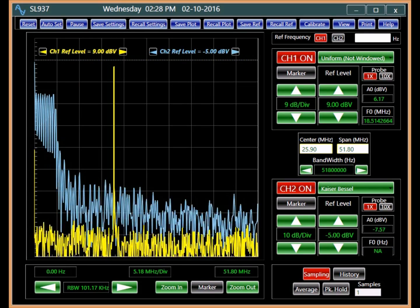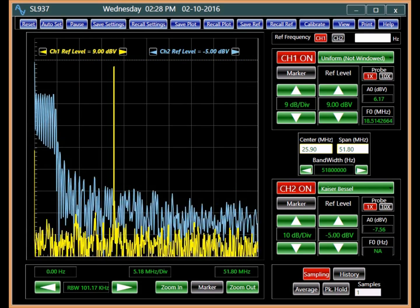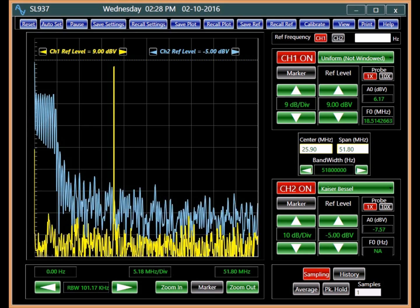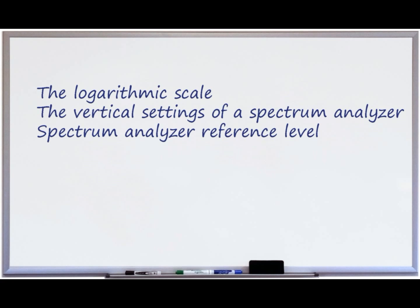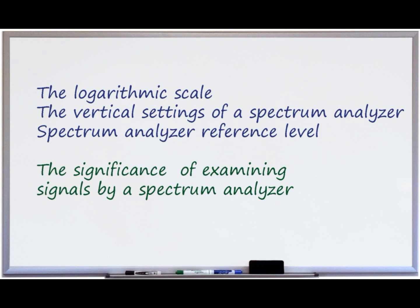Effective operation of a spectrum analyzer requires a thorough understanding of these aspects. The intent of this tutorial is to briefly describe the logarithmic scale, illustrate the various vertical settings of a spectrum analyzer, and explain the importance of a reference level. We also review the significance of examining signals using a spectrum analyzer and an oscilloscope.